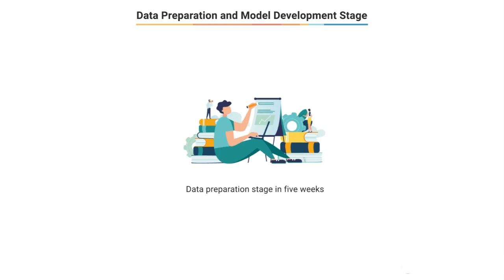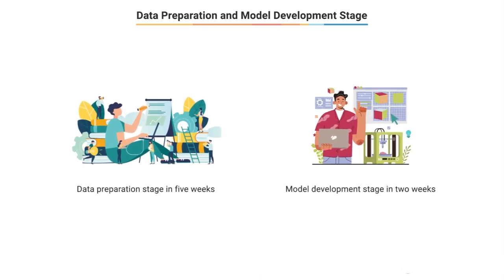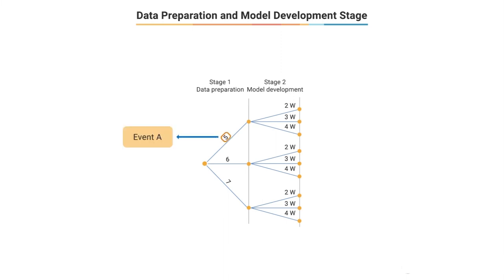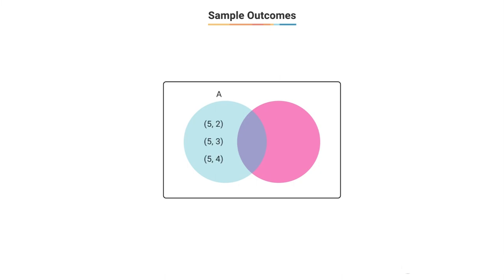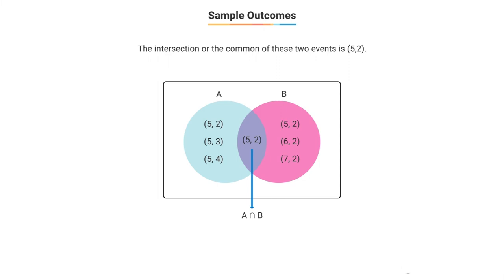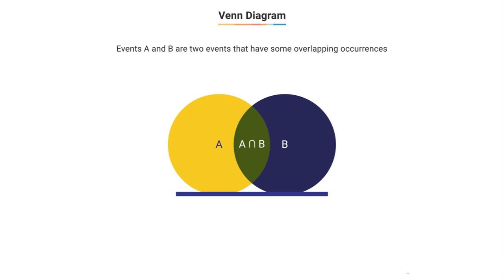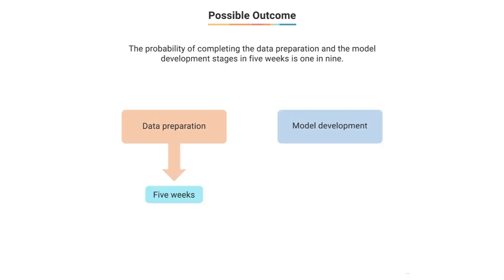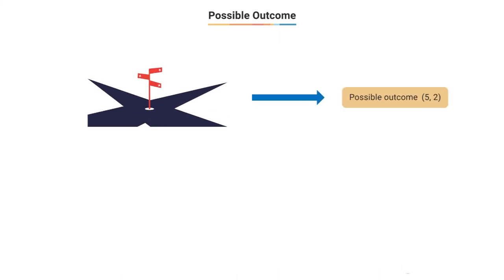Consider the event of completing data preparation in 5 weeks (event A) and completing model development in 2 weeks (event B). Event A outcomes: (5,2), (5,3), (5,4). Event B outcomes: (5,2), (6,2), (7,2). The intersection of these two events — represented as A ∩ B — is the common outcome (5,2). In a Venn diagram, the overlapping green-shaded area represents A ∩ B. The probability of this intersection is 1/9.